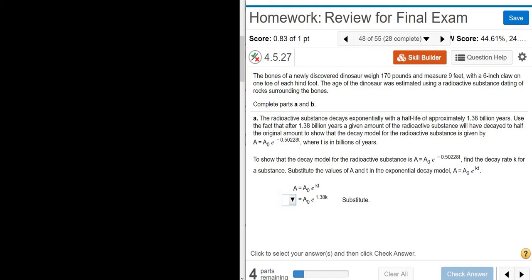So if you start with 10, after 1.38 billion years, you have 5. Then after another 1.38 billion years, you have 2.5. So it just gets cut in half every 1.38 billion years. That's called the half-life.